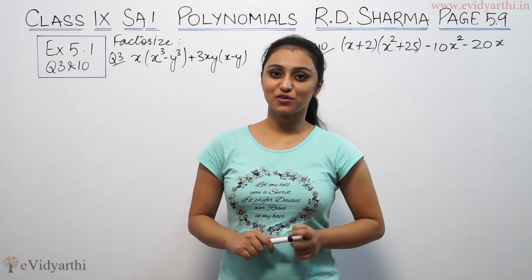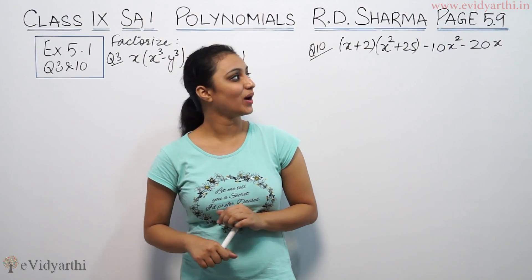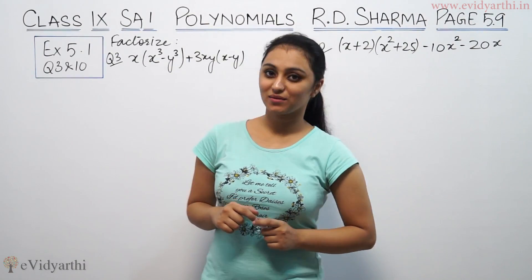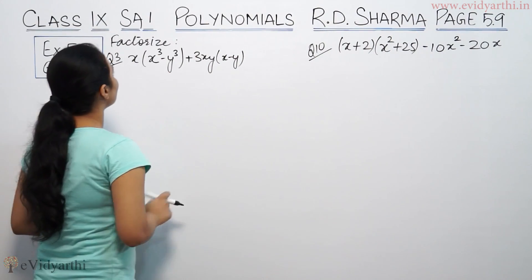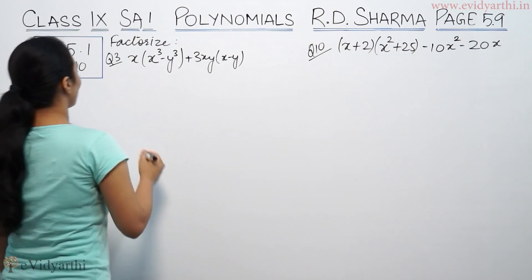Hi, this is Khushbu with another question on polynomials. This is question number 3 and 10 from exercise 5.1, page number 5.9 from R.D. Sharma. Factorize x(x³ - y³) + 3xy(x - y).